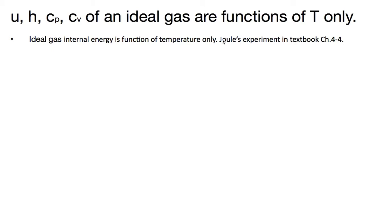First, let's look at the historical experiment conducted by Joule, as described in the textbook's chapter 4, section 4. Essentially what Joule did was that he found two ideal gas systems of the same temperature and the same mass but different volume, and he found that such two systems would have the same internal energy. That established the principle that ideal gas internal energy is a function of temperature only.